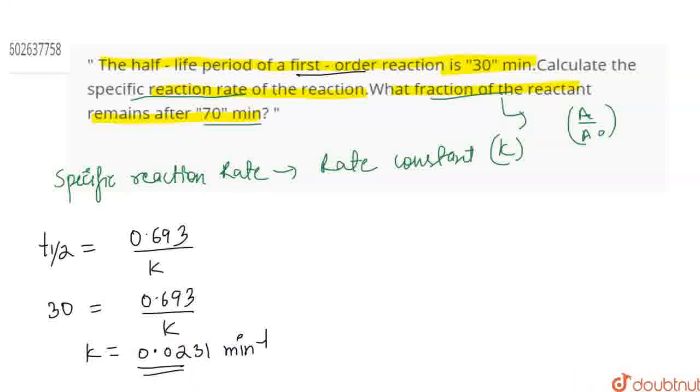Now, what do we have to calculate? I have to calculate the A by A0 ratio. So how do I calculate it? I know that for first order reaction, A equals A0 times e to the power minus kt. So A by A0, you have to calculate e to power minus k—0.0231.